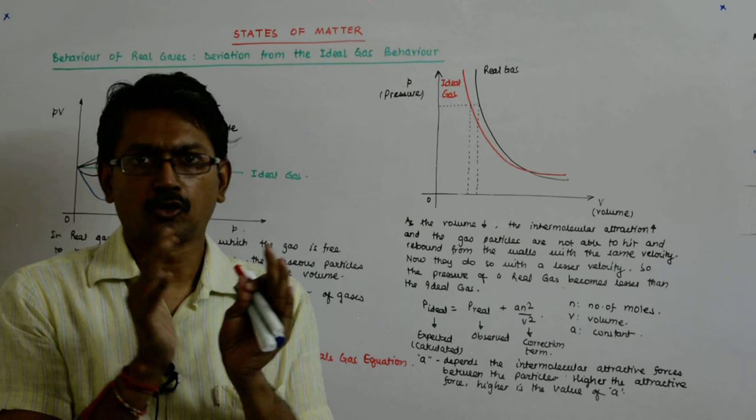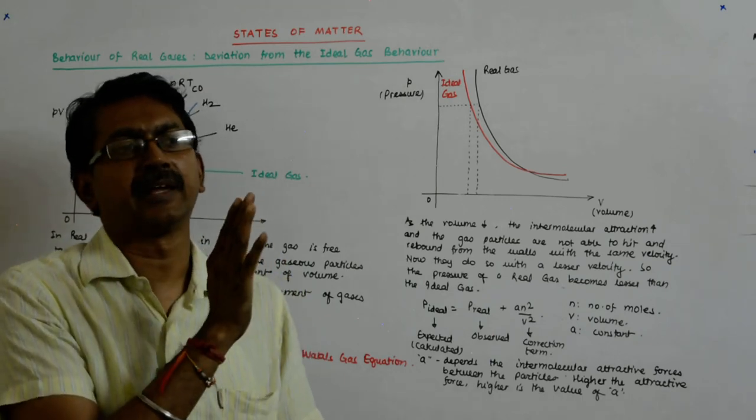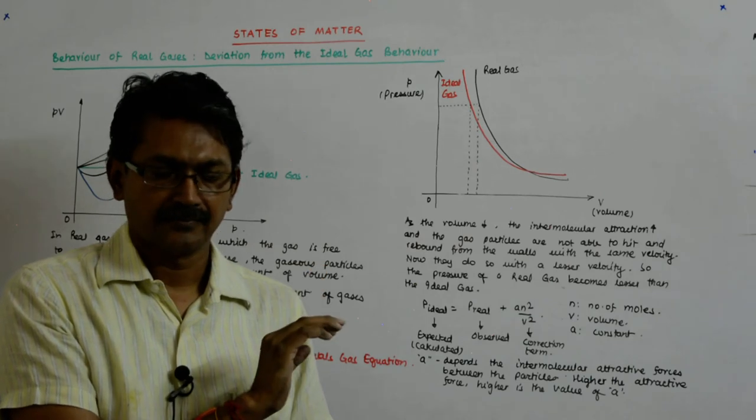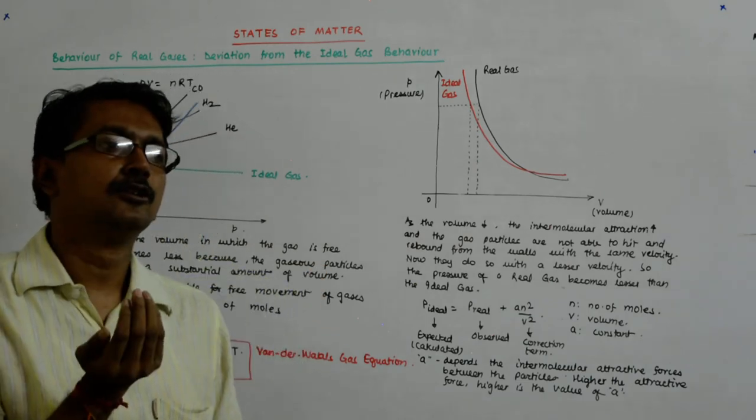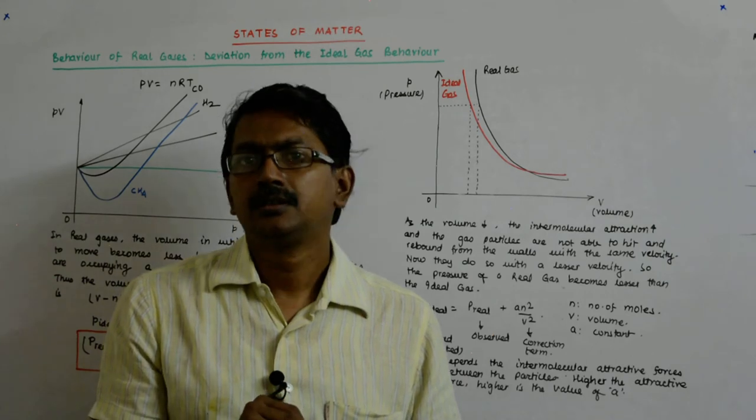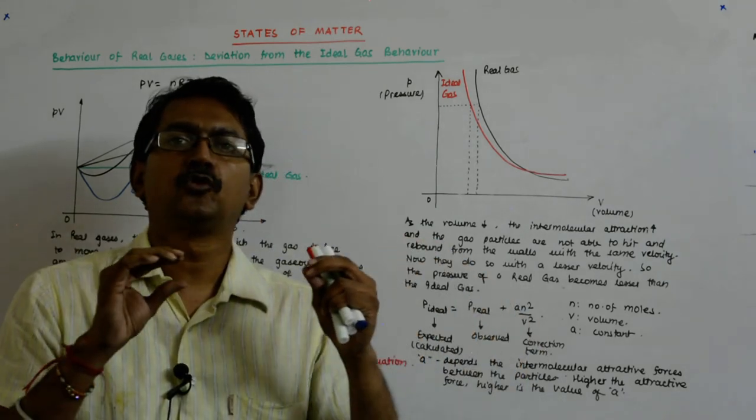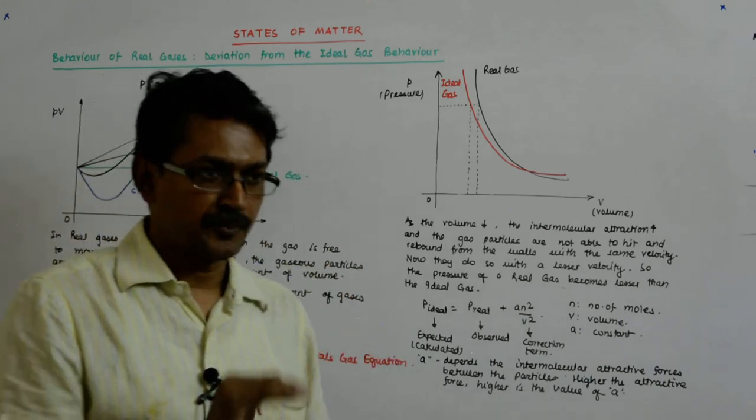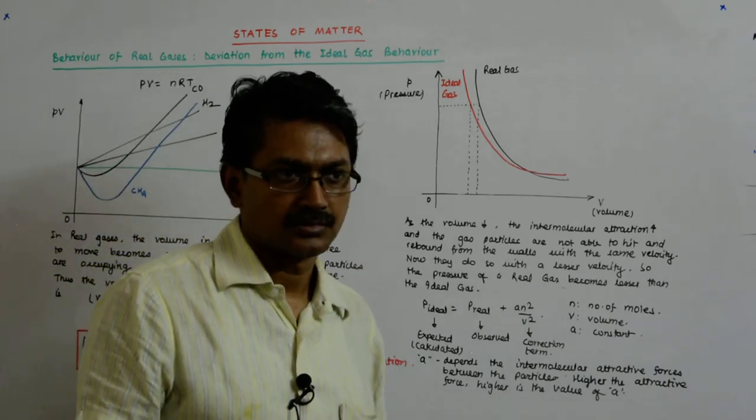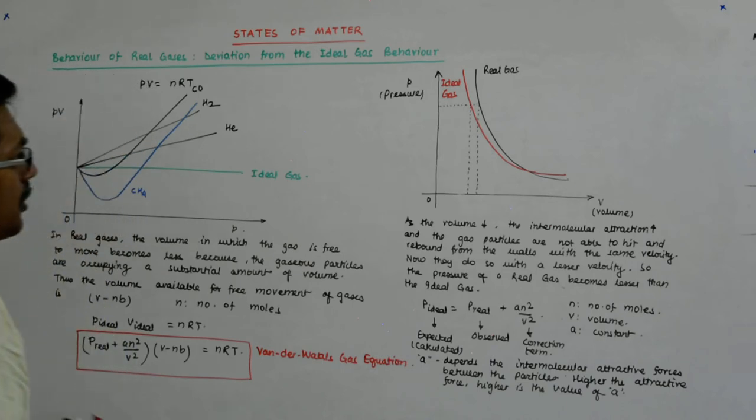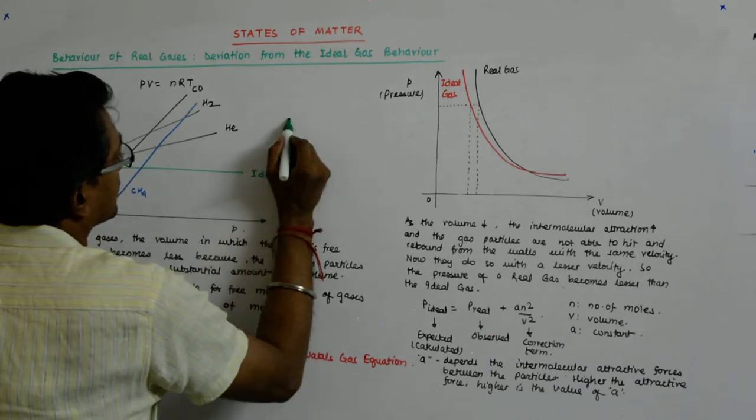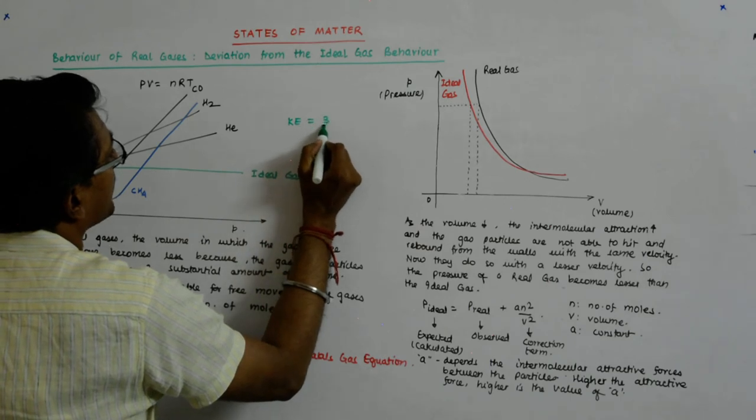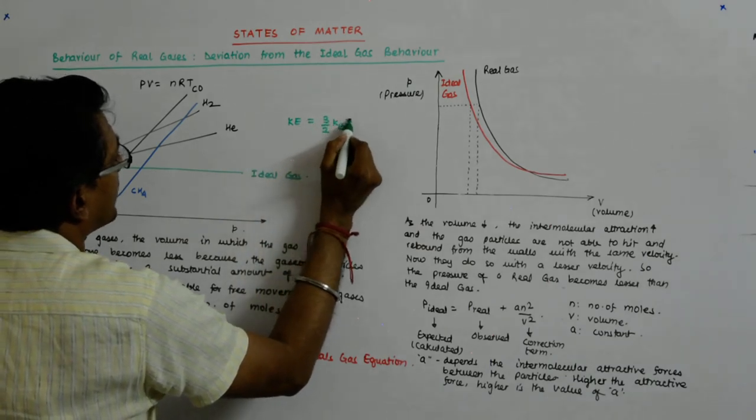So their deviation from the real behavior will become higher, correct? Now at lower temperature, the particles are moving slowly. Their speed goes down because I told you that the kinetic energy of a particle is equal to 3 upon 2 K_B T.